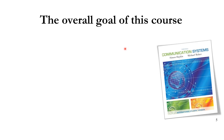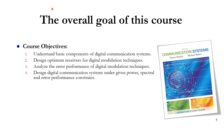The overall goal of this course covers four important objectives. First, to understand the basic components of digital communication systems. Second, to be able to design optimum receivers for digital modulation techniques. Third, to analyze the error performance of digital modulation techniques. Fourth, to design digital communication systems under given power, spectral, and error performance constraints.